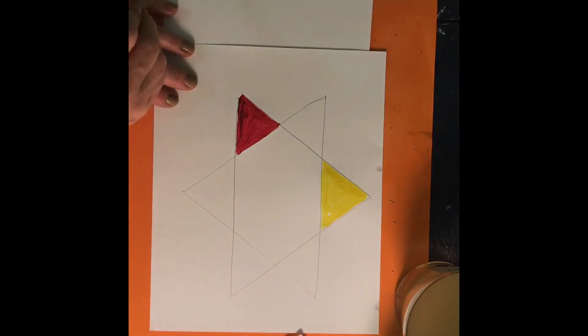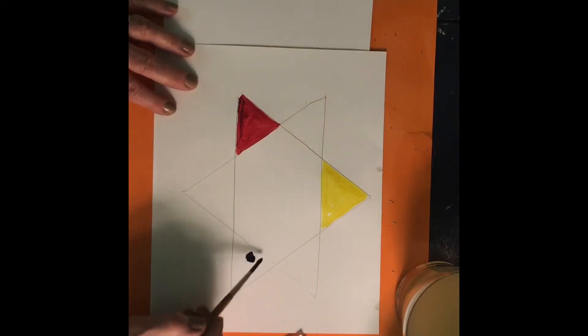And then, finally, the last primary color we have is blue. These are the colors that, when you mix them together, make all the colors that you can paint with.